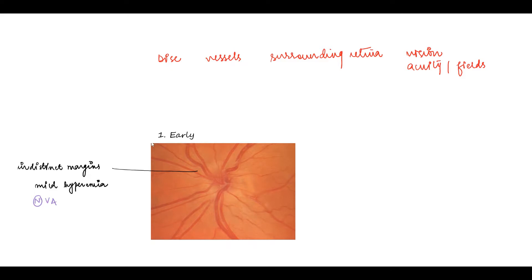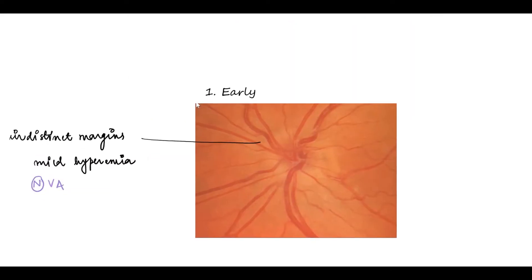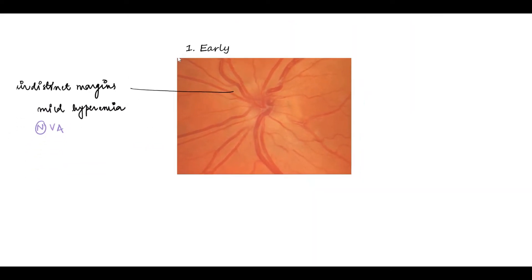In the early stage of papilledema, there are very minimal changes and one thing we should look out for are the spontaneous venous pulsations. These are seen at the disc and if absent, it raises a great amount of suspicion for intracranial tension. However, in 20% of people, they might be normally absent, so these are not diagnostic but we should look out for these findings.